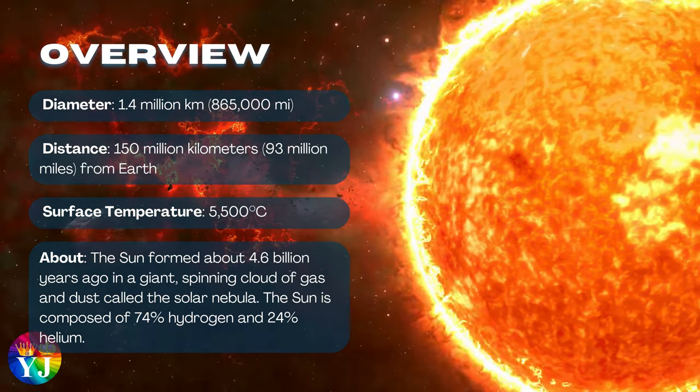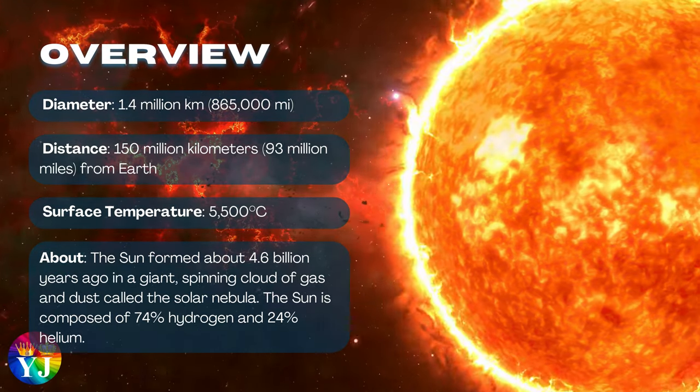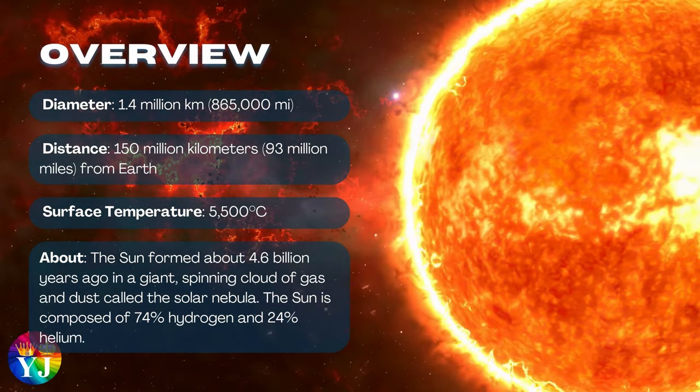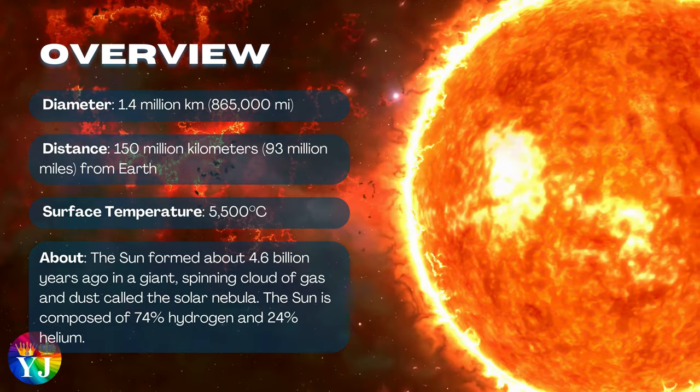About the Sun: The Sun formed about 4.6 billion years ago in a giant spinning cloud of gas and dust called the Solar Nebula. The Sun is composed of 74% hydrogen and 24% helium.